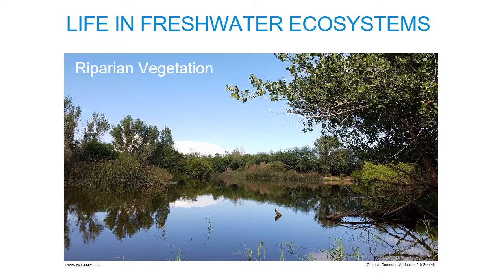Riparian vegetation growing along the margins of freshwater ecosystems is also an important component of the system. It provides an important energy source and substrate in the form of falling leaves, branches, and trunks. Riparian vegetation also stabilizes riverbanks and provides habitat to a wide range of animal species. Riparian plants have special adaptations enabling them to live in the high moisture and high disturbance regimes that characterize river corridors and lake margins.